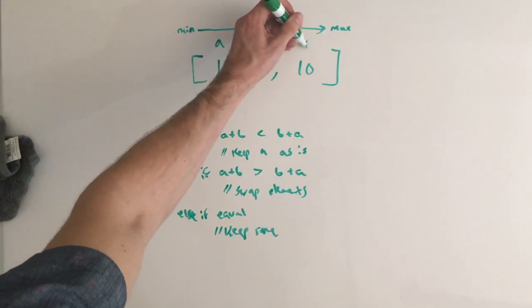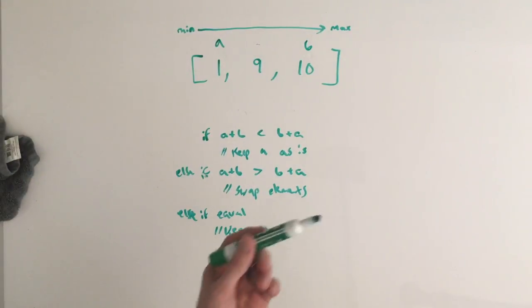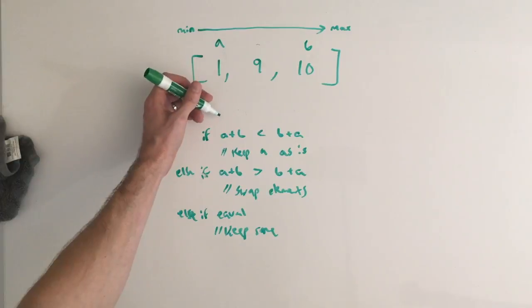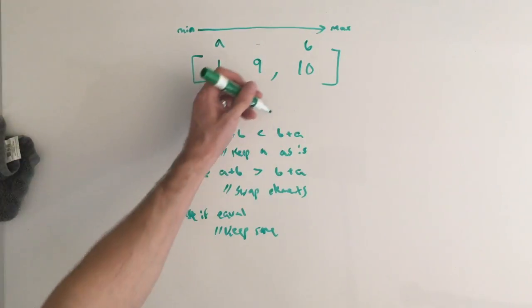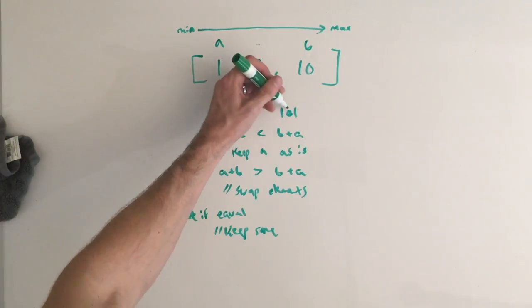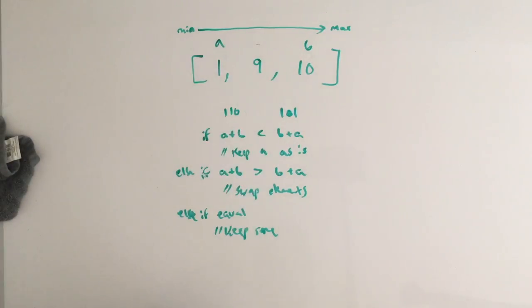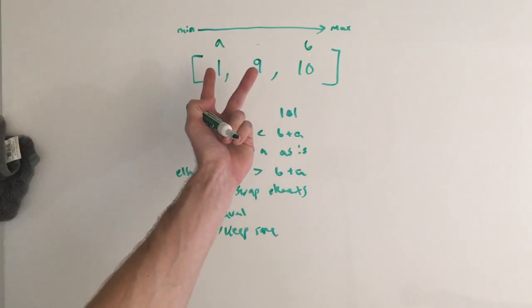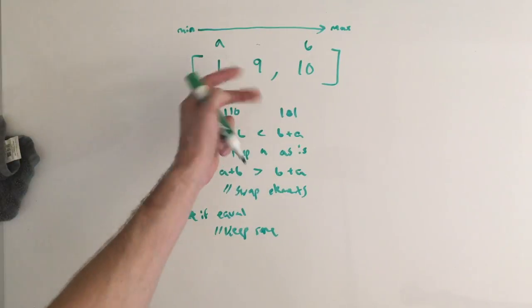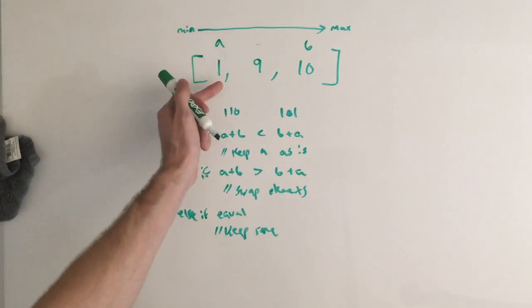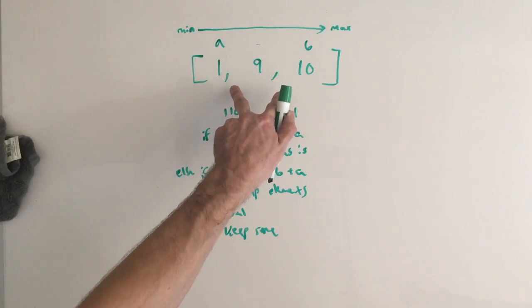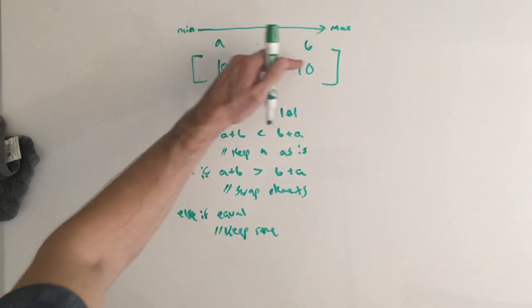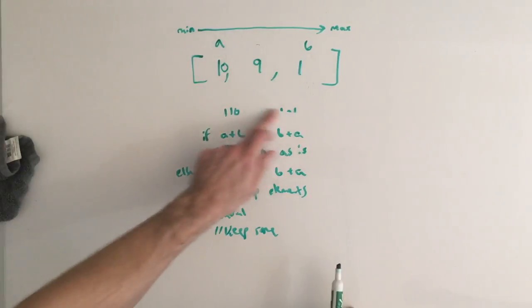Let's move on and move the B over here. So we're going to check the same thing. Is A plus B, which is 110, less than B plus A, which is 101. And it is not less than, it's actually this one right here. So we need to swap these elements because it makes sense that we need it to become the minimal when concatenated together. So 110 should be swapped to be 101. So that should make sense.